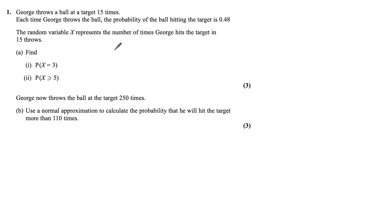The first thing to note is that within this experiment, George is throwing a ball and either hitting the target or missing the target. So there are two outcomes and a fixed number of trials, so we are looking at a binomial distribution. We say X is distributed binomially with 15 throws and probability 0.48 of hitting.